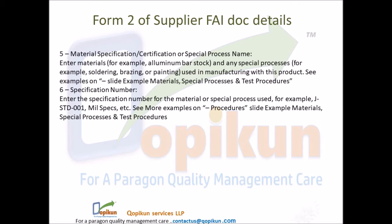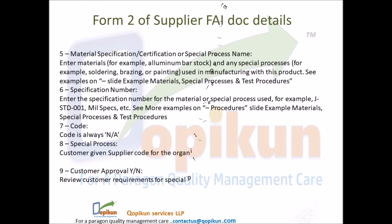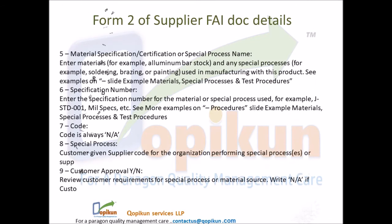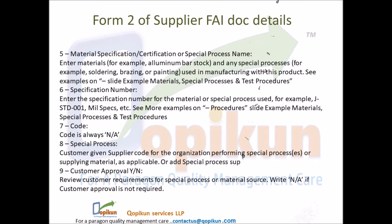Field 6 — specification number: enter the specification number for the material or special process used, for example JSTD 001, mil specs, etc. See more examples on the procedures slide for example materials, special processes, and test procedures. Field 7 — code: code is always not applicable. Field 8 — special process: enter the customer-given supplier code for the organization performing the special process or supplying material, as applicable, or add the special process supplier name and address.